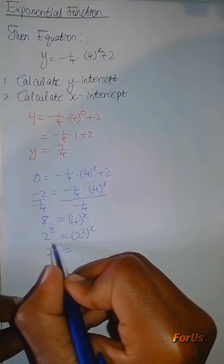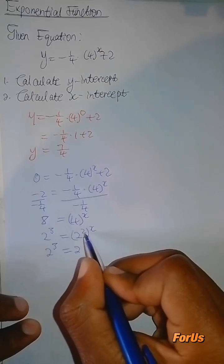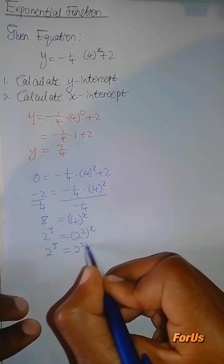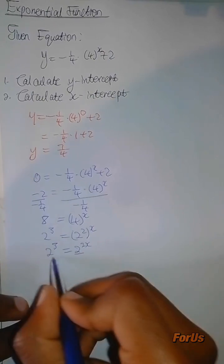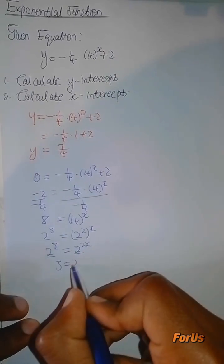You're going to say 2 to the power of 3. Here you're going to say 2 to the power of 2 multiplied by x. You're going to have 2x. Then here, the bases are the same, so you're going to equate the exponents. You're going to say 3 is equal to 2x.